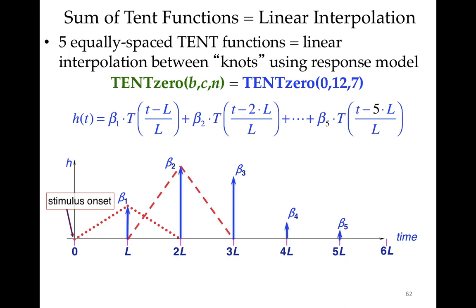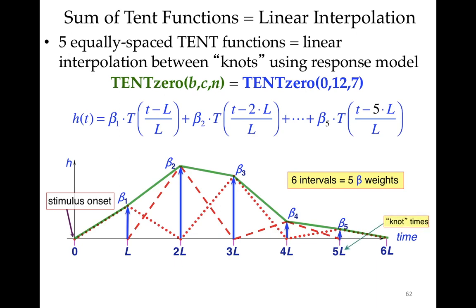The sum of tent functions is essentially the same as linear interpolation. In a cartoon example, there are five equally spaced tent functions spaced L units apart in time. The points where the tent functions are defined are called knots in spline theory — at L, 2L, 3L, 4L, and 5L seconds. The tent function expansion is beta1 times the tent centered at L, plus beta2 times the tent at 2L, and so on. Adding those triangles up gives a broken line segment resembling linear interpolation.